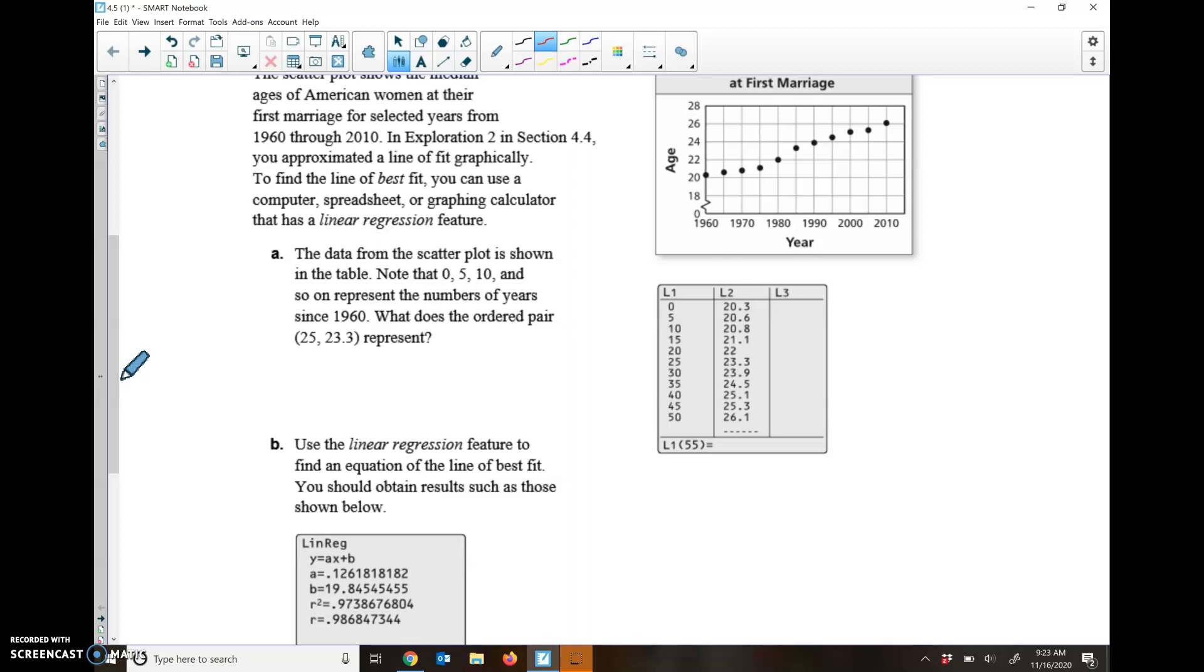The data from the scatter plot is shown in the table. Note that 0, 5, and 10, and so on represent the number of years since 1960. So 0 years after 1960, 5 years after 1960 is 1965, 10 years after 1960 is 1970.